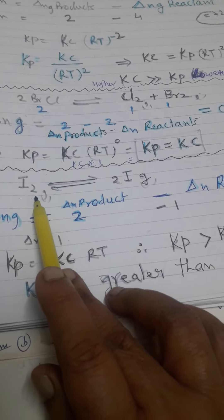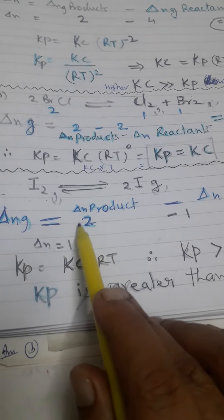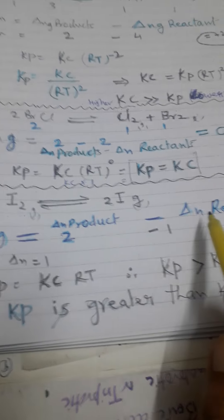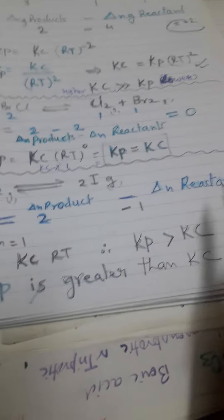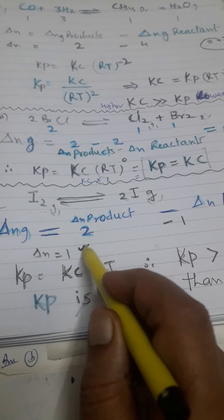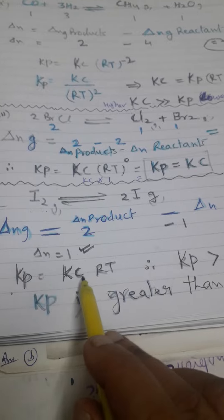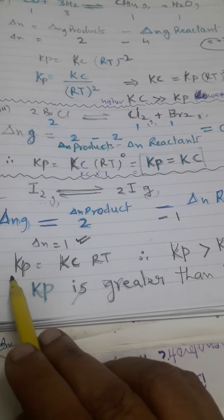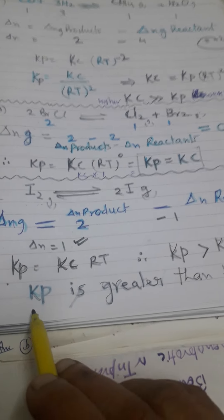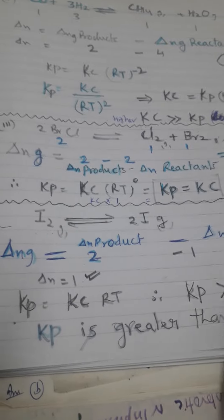In the next case, I₂ gives 2 moles of I — so there is 1 mole of reactant and 2 moles of product. Products minus reactants gives 2 - 1 = +1, so ΔN = +1. This means Kp is higher than Kc, because Kc multiplied by RT gives Kp. When ΔN is positive, Kp is greater than Kc.